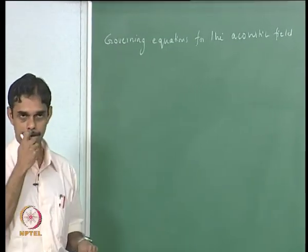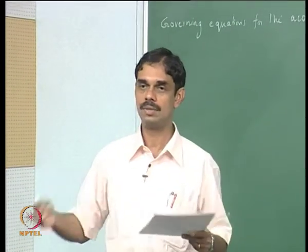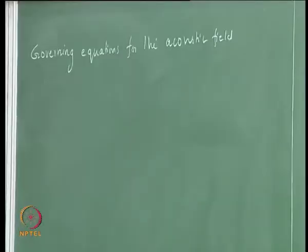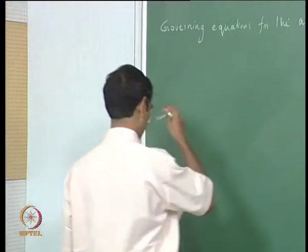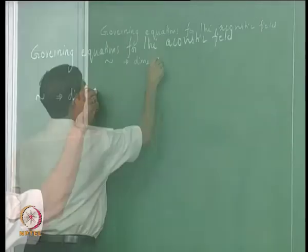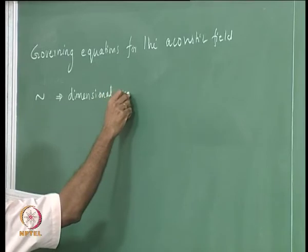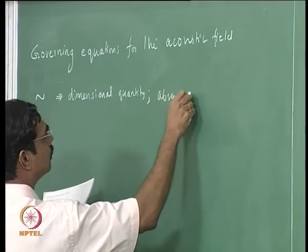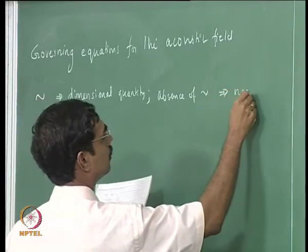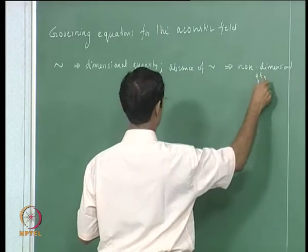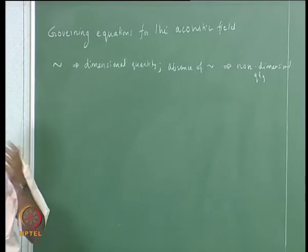We will use variables with tilde for the dimensional quantities and without tilde for the non-dimensional quantities. Normally people do otherwise, but I wish to deal with things in a non-dimensional way, so most of the time I will be writing non-dimensional equations. Tilde indicates a dimensional quantity; absence of tilde indicates a non-dimensional quantity. That is the convention we use; otherwise everything else is the same.